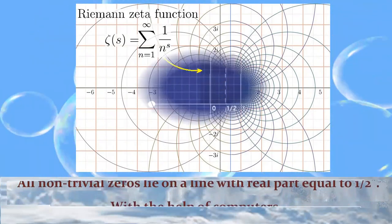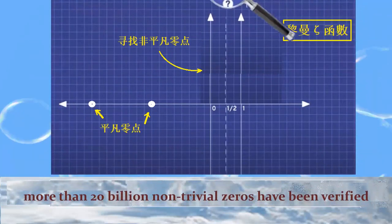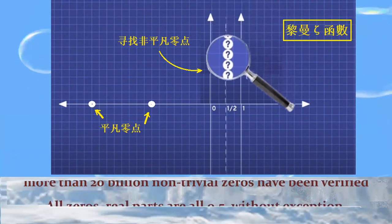With the help of computers, more than 20 billion non-trivial zeros have been verified. All zeros, real parts are all 0.5, without exception.